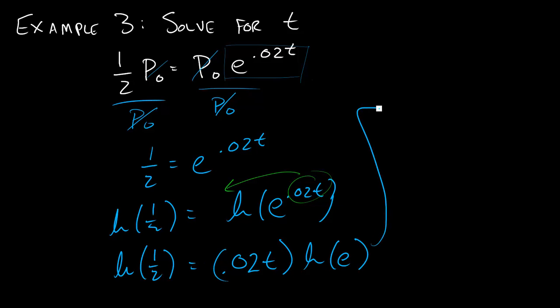And now, if I didn't understand what the ln of e was, I could just divide each side by 0.02 times the ln of e, and I would get t equals the ln of 1/2 divided by 0.02 times the ln of e. And now why is this writing a little bit too much? Well, the ln of e, as we actually learned in video one, is just one.